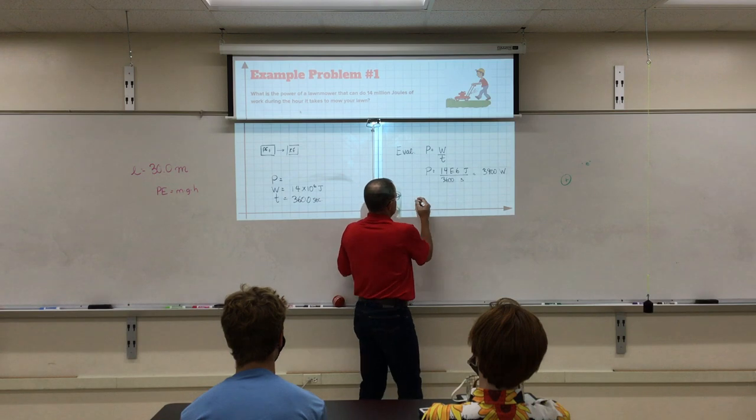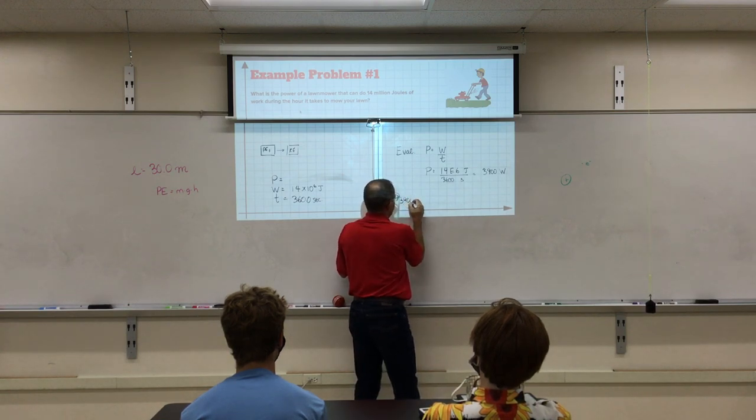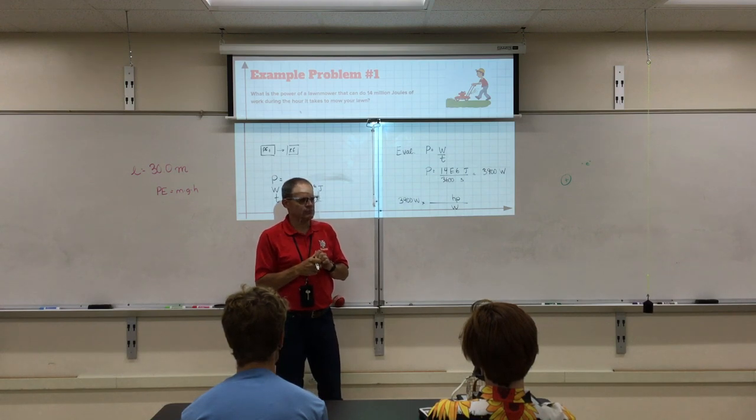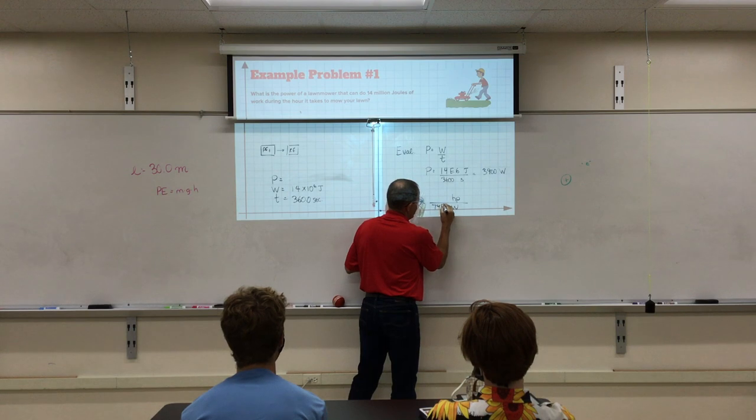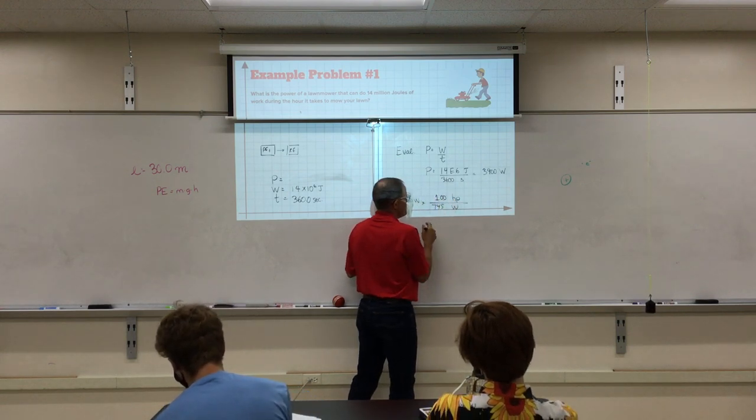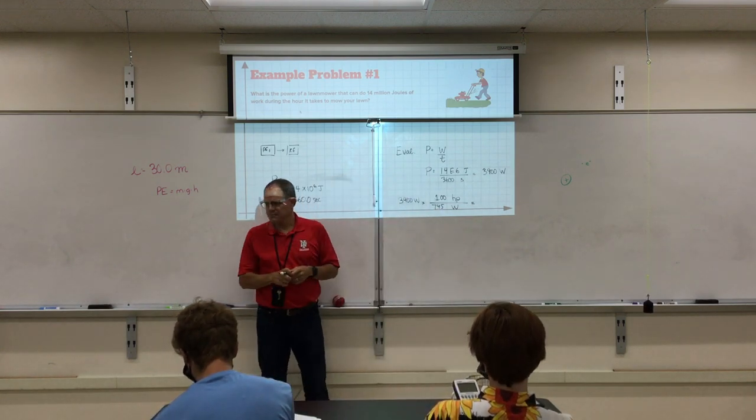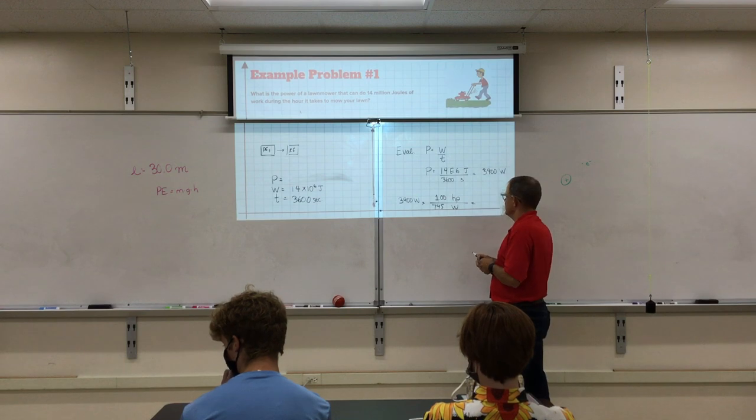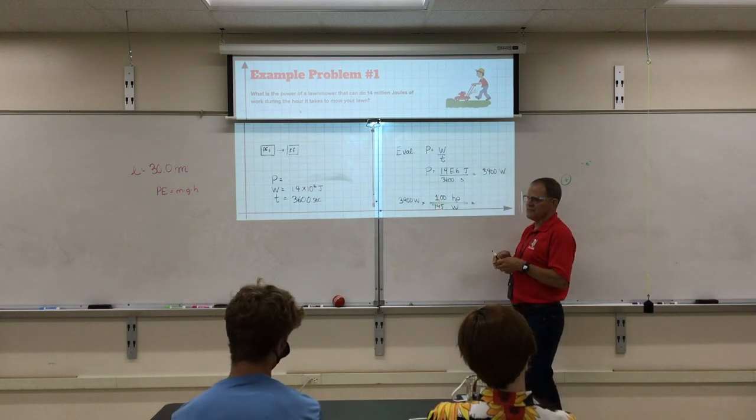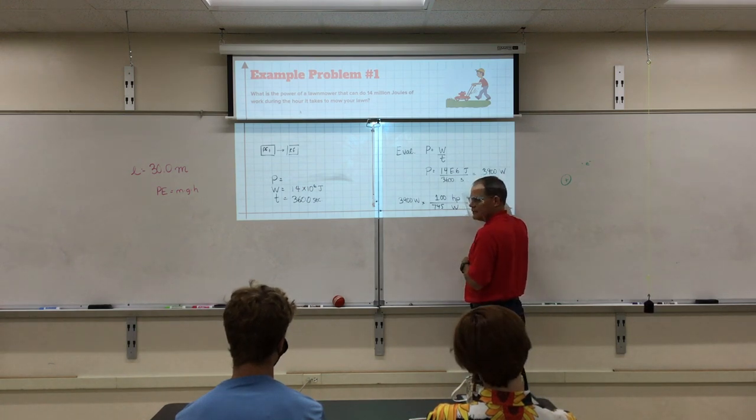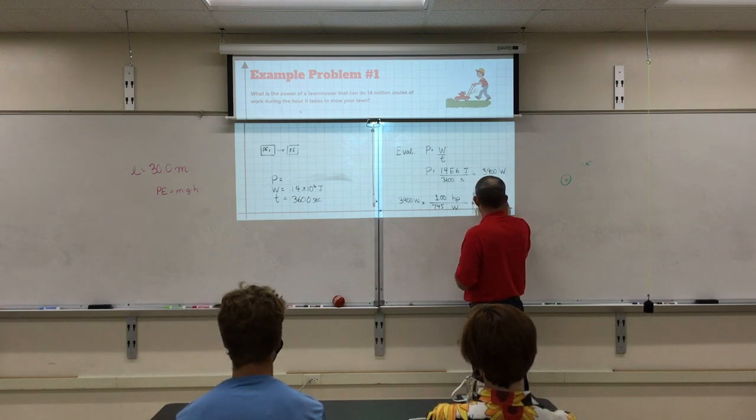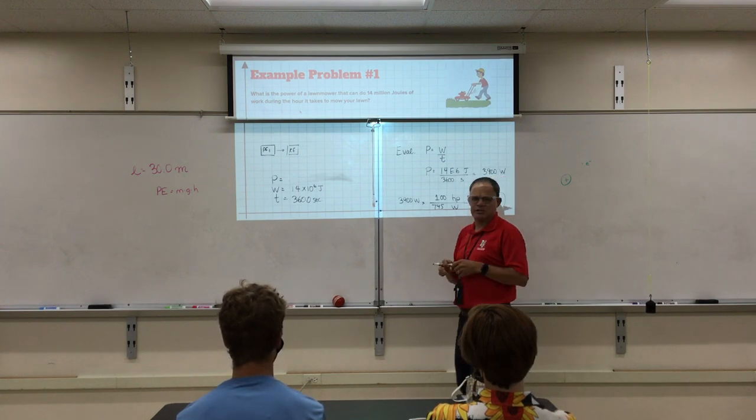Just to get an idea though, let's convert this. So how would we do a conversion? We would say 3,900 watts, and we've got to get rid of the watts and get horsepower. So where did the 745 go? It goes in the bottom. 745 watt is equal to 1.00 horsepower. What you got, Gus? We're keeping you awake here. Power checking. Okay. Take your answer. Divide by 745. 5.2? Yep. 5.2 horsepower is the power of a typical lawnmower, a push mower.